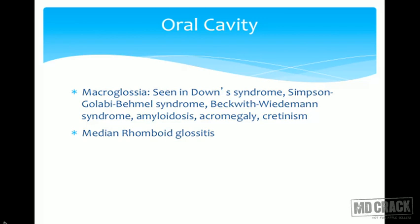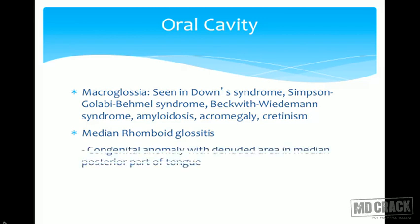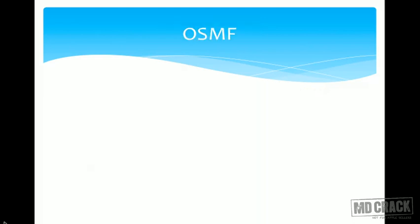Median rhomboid glossitis is a congenital anomaly with a denuded area in the median posterior part of the tongue. It may be associated with candidiasis.